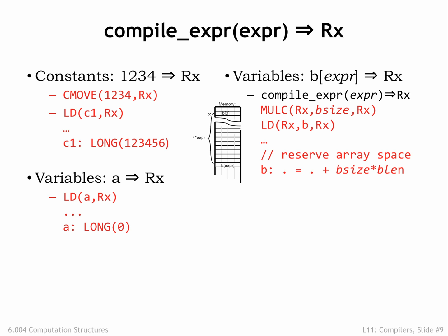If b was an array of integers, bsize would be 4. Now that we have the byte offset in a register, we can use LOAD to add the offset to the base address of the array computing the address of the desired array element. Then load the memory value at that address into a register.